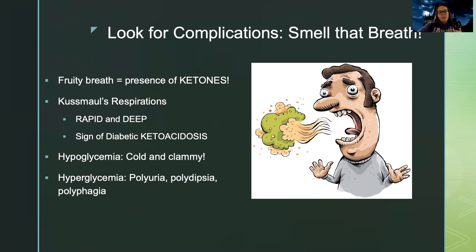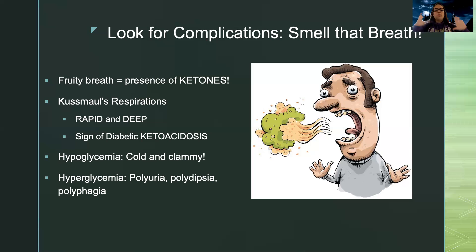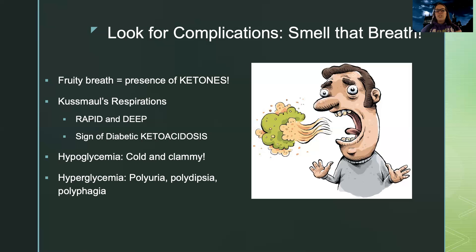We want to know what high and low blood glucose looks like. When blood glucose is low, we say 'cold and clammy, give me candy' — they'll be sweaty, usually hungry, tired, confused, with a decreased level of consciousness. Whereas with hyperglycemia, they're going to be urinating a lot, drinking a lot, and eating a lot. We'll differentiate these more in class, but we want to know the basics of when to check a patient's blood sugar.